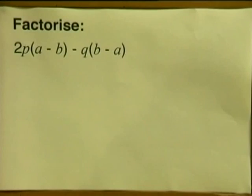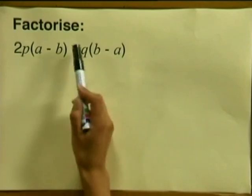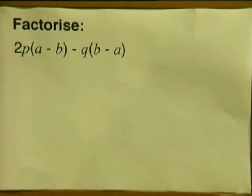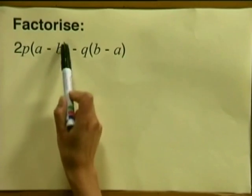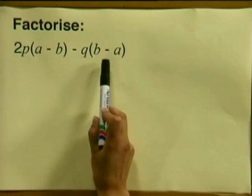Let me show you with this example. We are asked to factorize this expression: 2p multiplied by a minus b, minus q multiplied by b minus a. Now notice we have two terms because they are separated by a minus, and we need to look for a common factor. But we cannot take out our bracket as a common factor because the brackets are not the same.